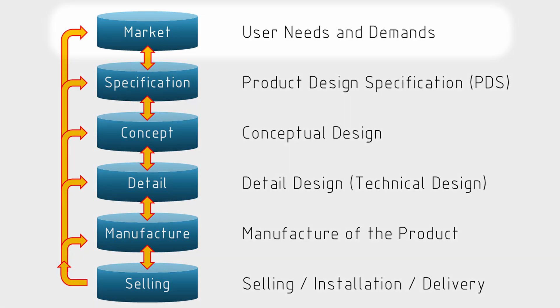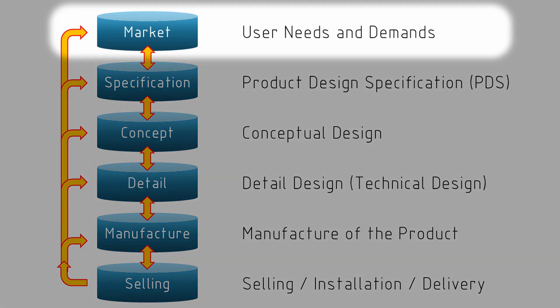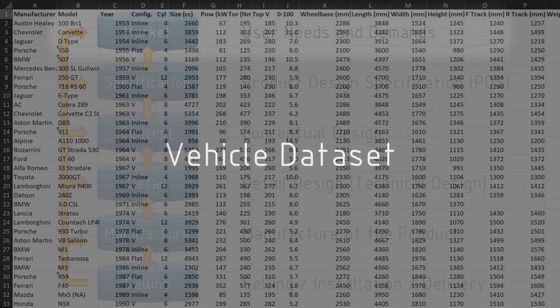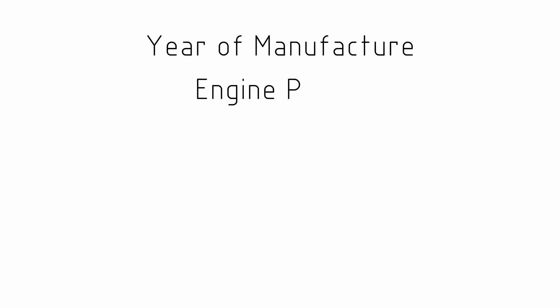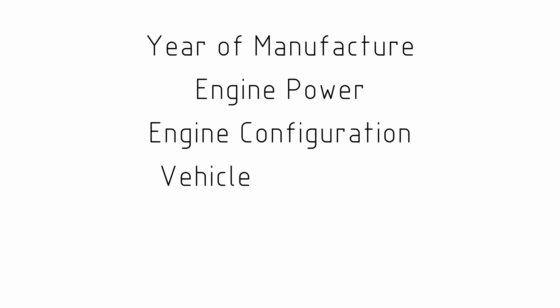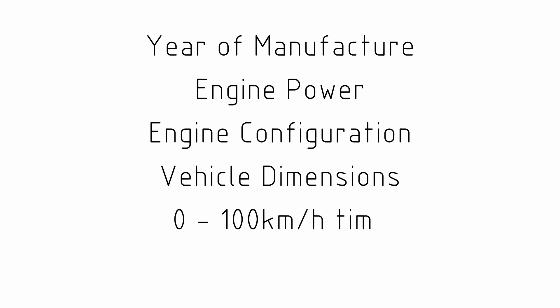This work is part of the market research phase of the total design process. We're going to create a data set of cars that collects a number of different parameters. This will include things like the year of manufacture, how powerful a vehicle is, how the engine is arranged, what are the dimensions of the car — the length, the width, the height — and the weight, and have a look at a couple of performance parameters such as the zero to 100 kilometer an hour time or the top speed of the vehicle.